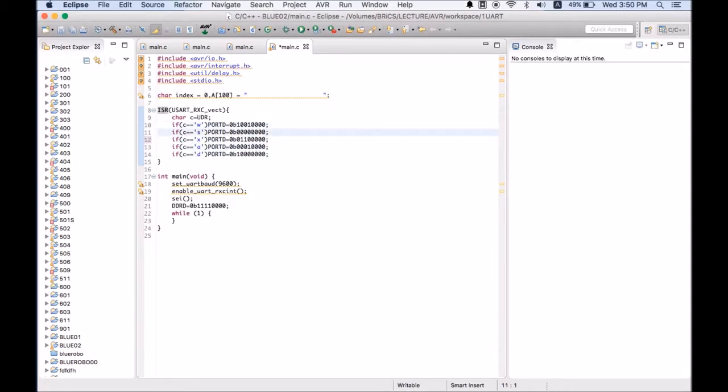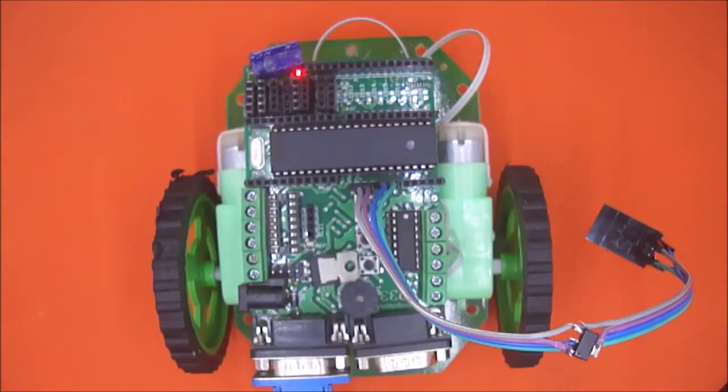S is used to stop the robot, X is used to reverse direction, A is for left, and D is for right turn. Now let's transfer this code to the board and see if it's working.